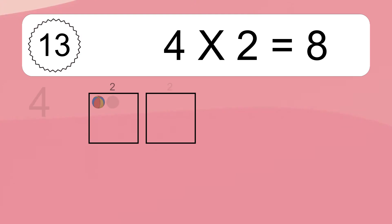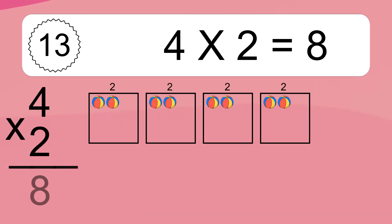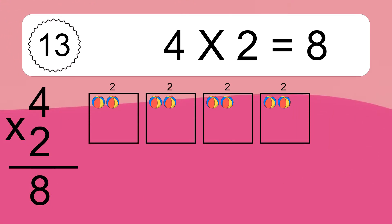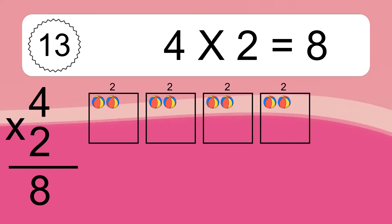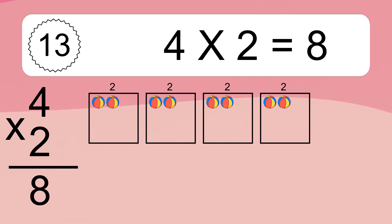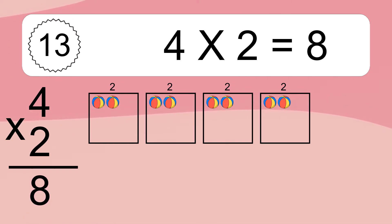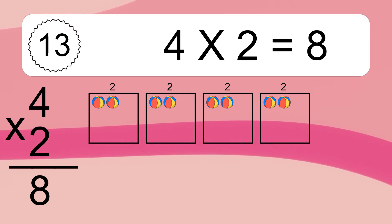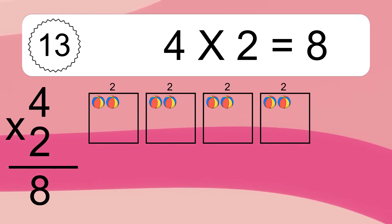4 times 2 equals what? 4 times 2 equals 8. We have 4 boxes and each box has 2 colorful balls inside. If you count all the balls in all the boxes together, you will have 4 times 2 balls. This equals 8 balls.